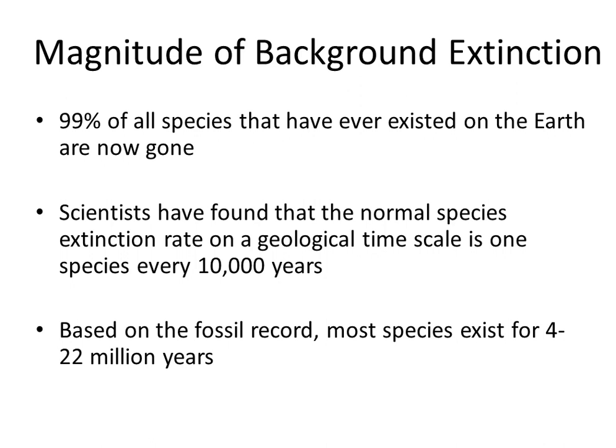99% of all species that have ever existed on the Earth are now gone. Scientists have found that the normal species extinction rate on a geological timescale is one species every 10,000 years. Based on the fossil record, most species exist for 4 to 22 million years.